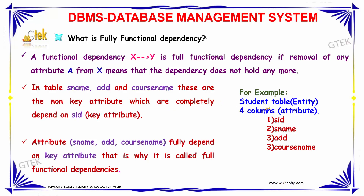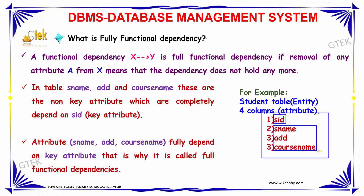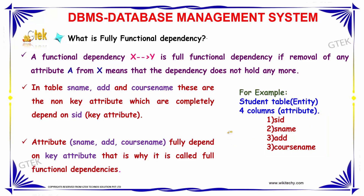In our table, we have four columns such as SID, SNAME, ADD, and COSNAME. These are non-key attributes which are completely dependent on the key attribute SID. So, these three are fully dependent on the key attribute SID. This is what is called full functional dependency.